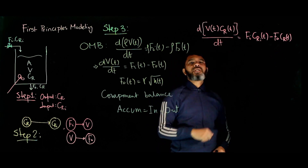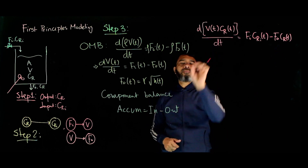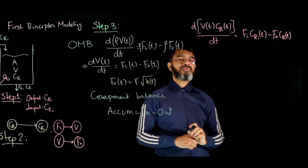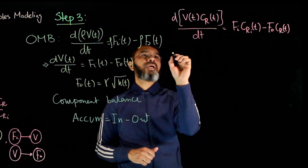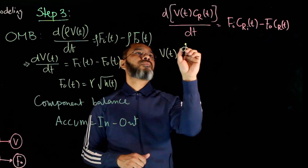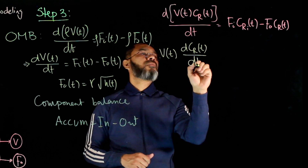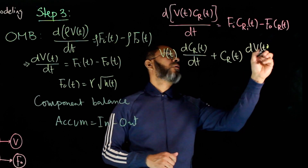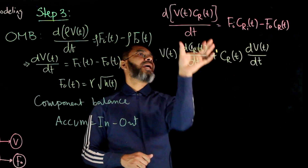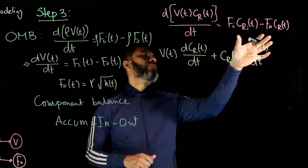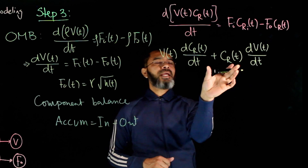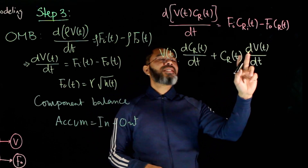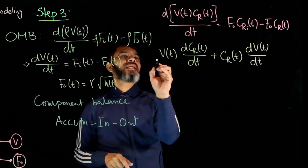CR is represented in terms of mass per unit volume, so multiplying by volume gives the mass. For our case, both V and CR are functions of time. Expanding the left side using the product rule, and substituting dV/dt equals Fi(t) minus F-naught(t), we can replace dV/dt with this term on the left side.